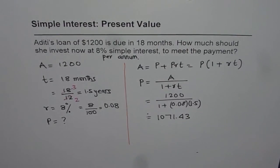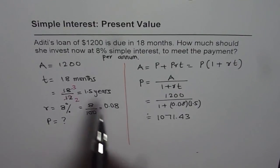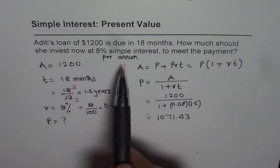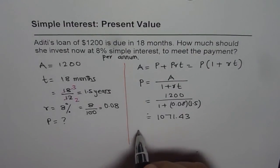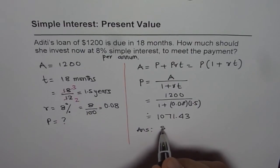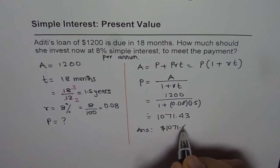So this is the amount which Aditi should invest now at 8% simple interest so that after 18 months she can get $1200. So we can write our answer as amount to be invested now is $1071.43.